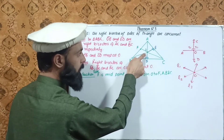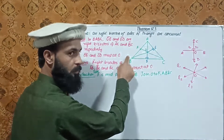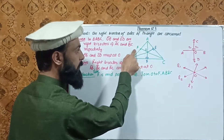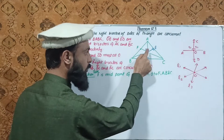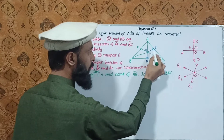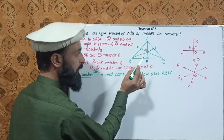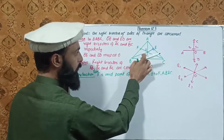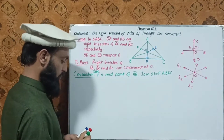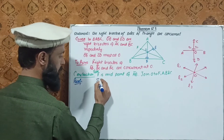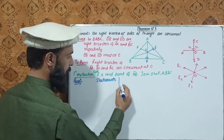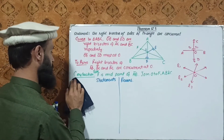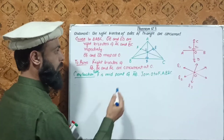The proof: O is on the right bisector of AB. OF is the right bisector of AB, OE is the right bisector of AC, and OD is the right bisector of BC. So OF, OE, and OD are the three right bisectors meeting at O.